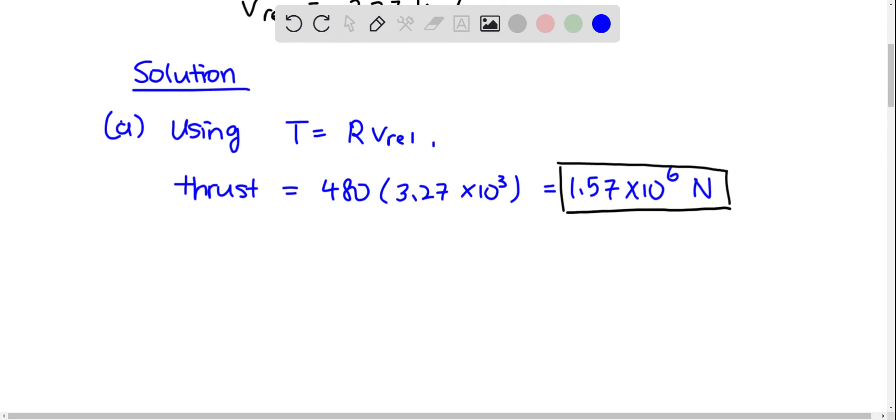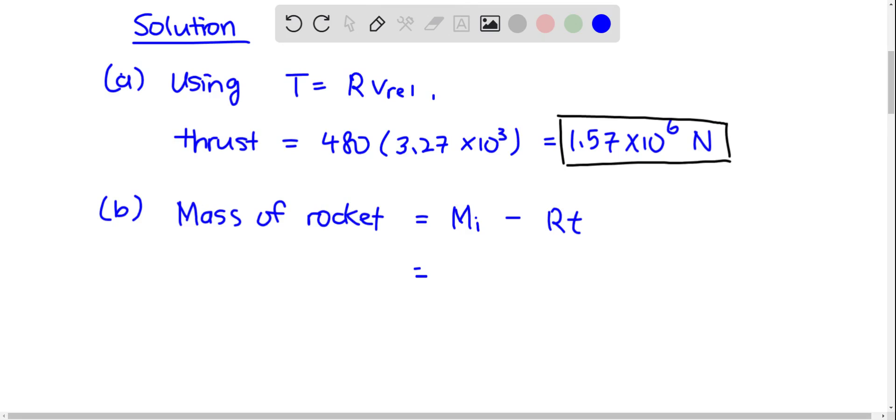Next, in part B, to find the mass of the rocket after 250 seconds. So it's just the initial mass of the rocket minus the rate of consumption of fuel times time. So you have 2.55 times 10 to the 5 kg minus 480 times 250.